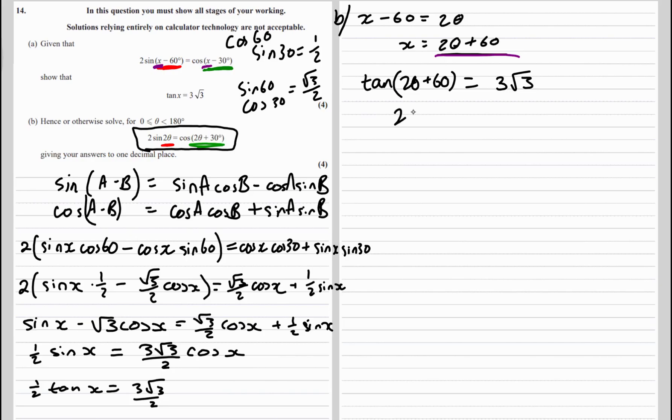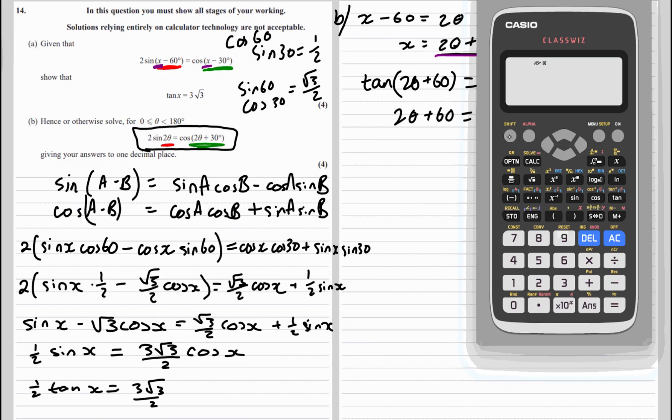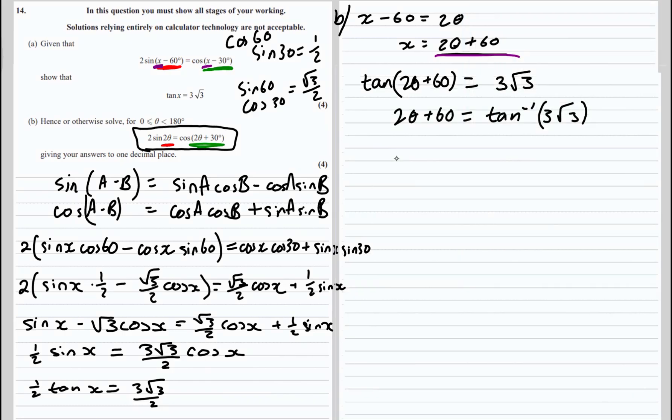So we're going to do arc tan of 3 root 3. So let's type that into the calculator, shift tan, 3 root 3. In degrees we get 79.1 as our first answer.